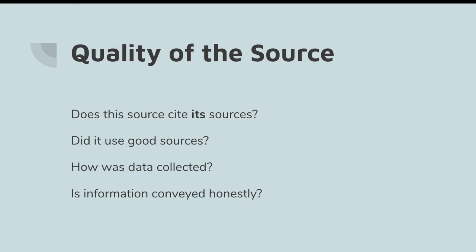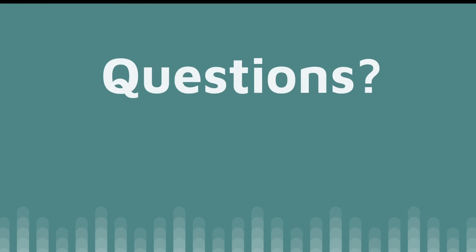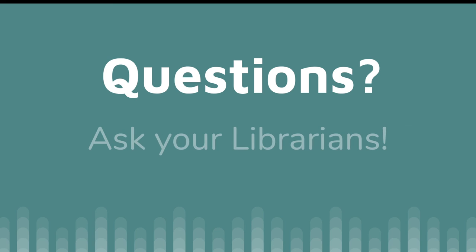And it's always a sign of a great source when they acknowledge any limitations or biases themselves. No study or source is going to be perfect, and acknowledging that shows that the people behind this information have thought carefully about what they are sharing and how they can improve going forward. So hopefully those questions have helped you get your critical thinking skills in gear. If you have questions about a particular source or anything else related to research, please ask your librarians — we are always happy to help.